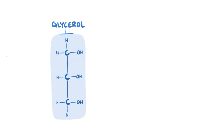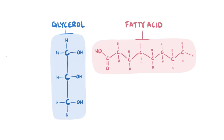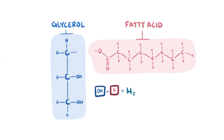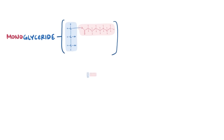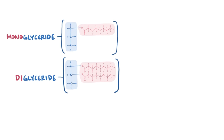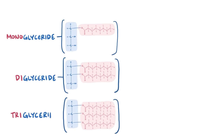Fats have a 3-carbon backbone called glycerol, as well as fatty acid chains. The fatty acid chain is basically a string of carbon and hydrogen atoms. When an OH group from the glycerol molecule binds to a hydrogen from the fatty acid, an H2O or water molecule gets released, and the two molecules link up. If this happens once, the result is a monoglyceride. If it happens twice, it's a diglyceride, and three times makes a triglyceride.